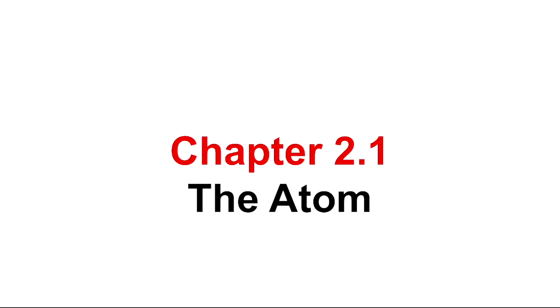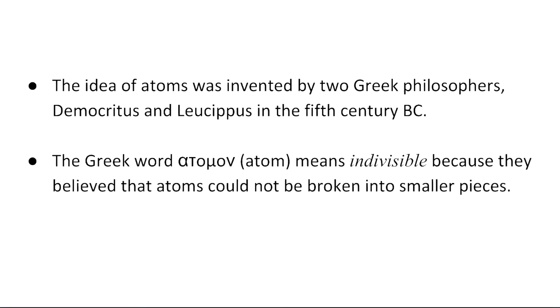Puppa Podcast presents 2.1 The Atom, Chapter 2.1. The idea of the atom was invented by two Greek philosophers, Democritus and Leucippus, in the 5th century BC. The Greek word atomos, that's written in Greek there, which means atom, means indivisible because they believed that the atom could not be broken down into smaller pieces. In fact, the atom itself was the smallest possible substance that anything could be made up of.